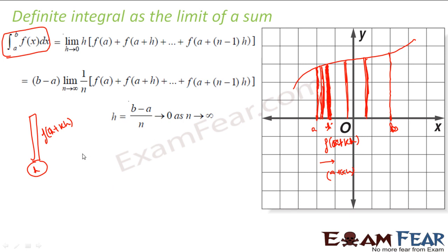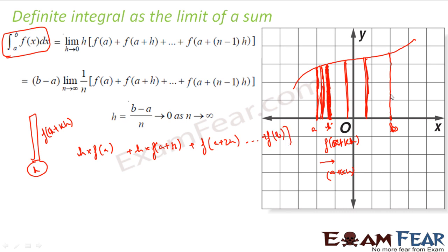So my area will be h times f of a, plus h times f of a plus h, plus h times f of a plus 2h, and so on till f of b, since b is the last point. Now, h is nothing but b minus a divided by n, because I am dividing this region into n rectangles and n is almost infinite. So my h equals b minus a over n.